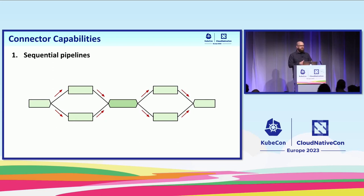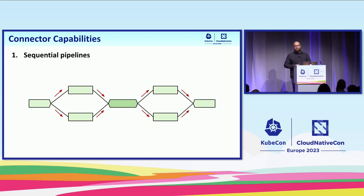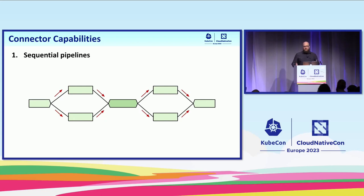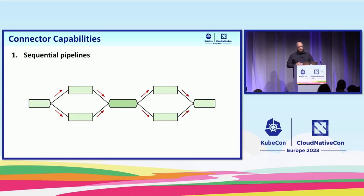The idea here is that it's a shared exporter for the first two pipelines, so when we have a shared exporter we merge data streams together. Then it's a receiver in the other pipeline. So this is the first capability that connectors give us: we can sequence pipelines. Previously, pretty much all pipelines were in parallel. But now we can interleave merging and replicating operations with processing operations. We can do this arbitrarily.